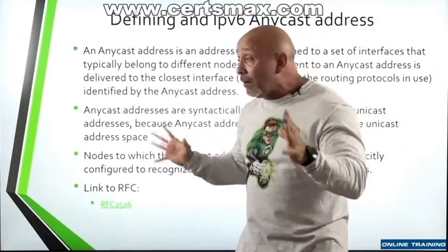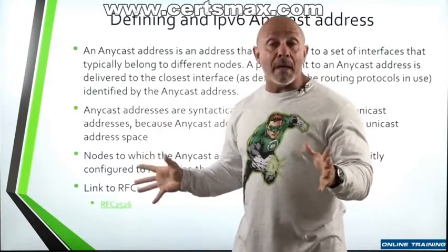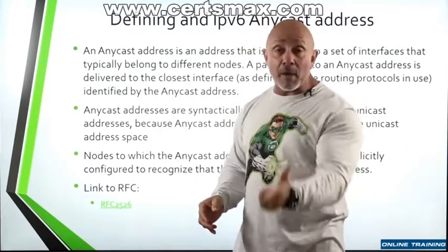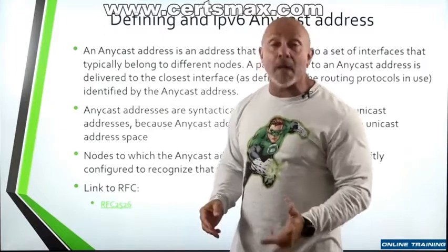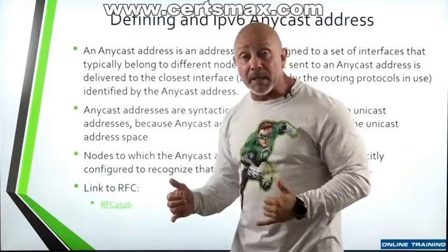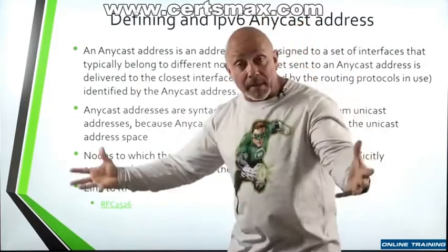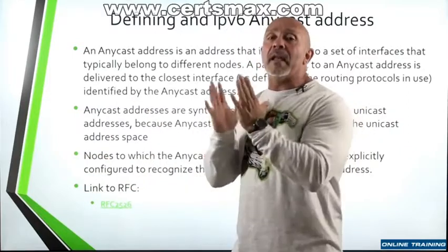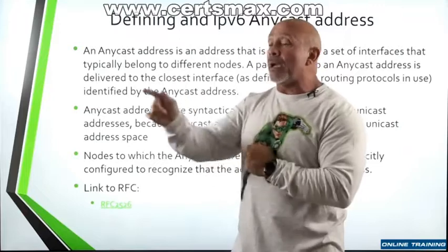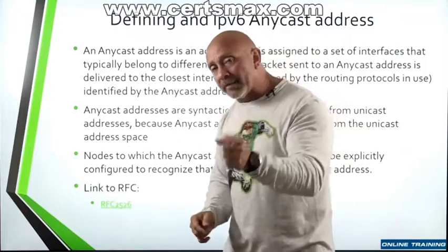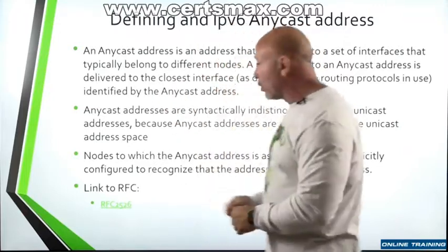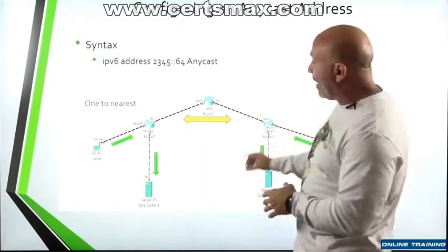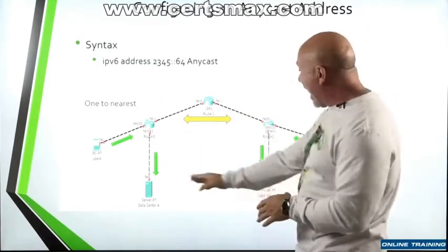Which is the nearest one? It depends on what routing protocol you're using — RIP, static routes, EIGRP, OSPF, BGP. Depending on the metrics, hop count, and so on, the protocol determines which path gets you there the quickest. That's what the anycast address does. In this illustration, you have two data centers, A and B.